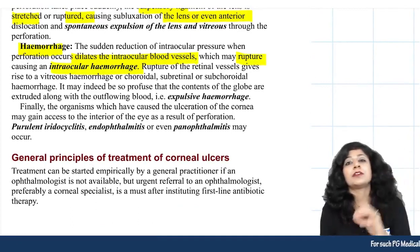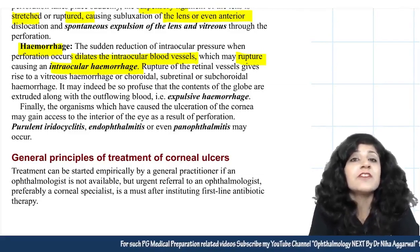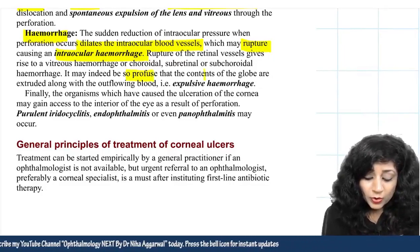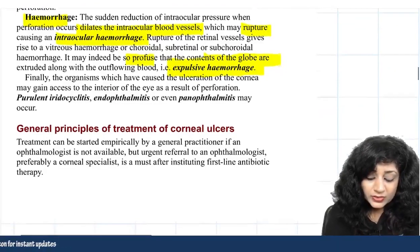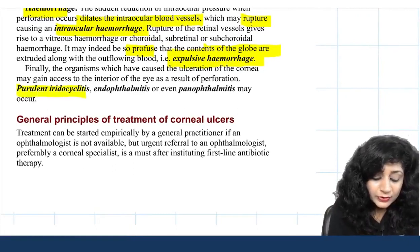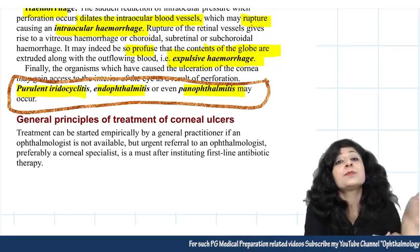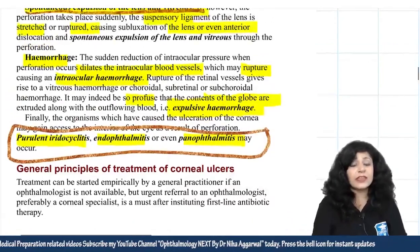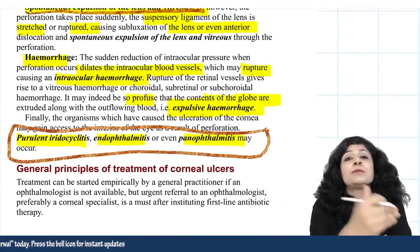A sudden reduction in intraocular pressure dilates intraocular blood vessels; rupture causes intraocular hemorrhage. Though uncommon, if hemorrhage occurs after anterior staphyloma, the prognosis is very guarded. If sufficiently profuse, globe contents are extruded — called expulsive choroidal hemorrhage. Finally, organisms causing corneal ulceration may spread inward, causing purulent iridocyclitis, endophthalmitis, and panophthalmitis. A small corneal ulcer can ultimately lead to purulent exudation throughout the entire eyeball with dangerous complications.